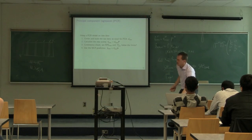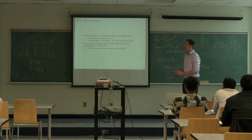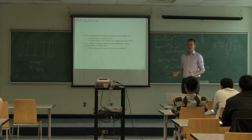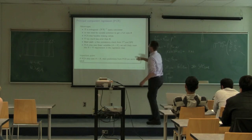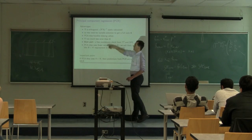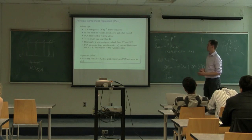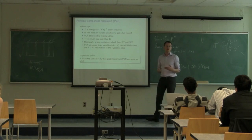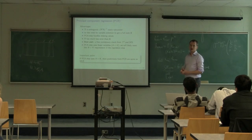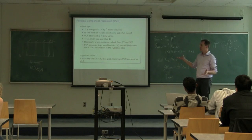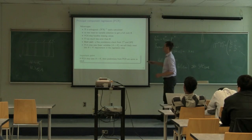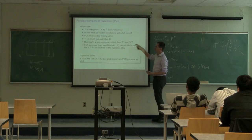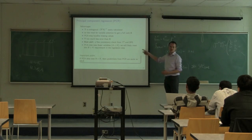So that's principal components regression in a very short description. The advantages far outweigh anything we have from least squares, which had a ton of disadvantages. PCR quickly eliminates most of them. Many people use principal components regression instead of PLS because of its computational and conceptual simplicity — once you understand PCA, the leap to PCR requires very little new material.